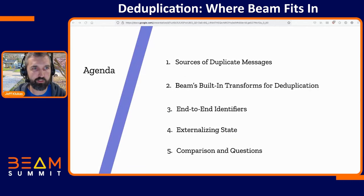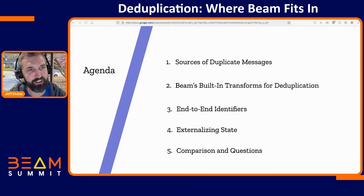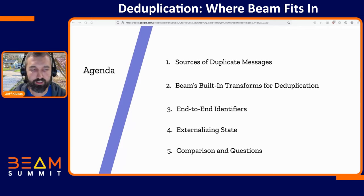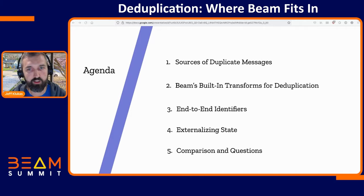Quick agenda: we have about 20 minutes together and then we'll take some questions. I'm going to talk about duplicate messages and why you probably have them in your pipeline, Beam's built-in transforms for deduplication, end-to-end identifiers and why they're useful, what it looks like to externalize state using something like Redis, and finally a quick comparison of the different strategies.